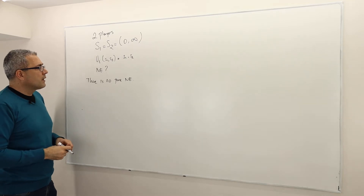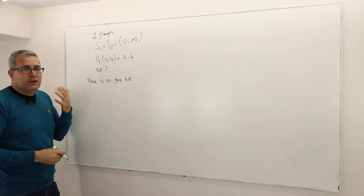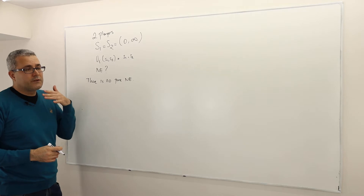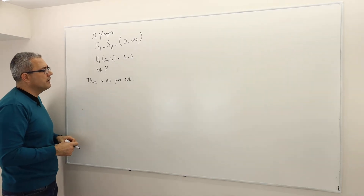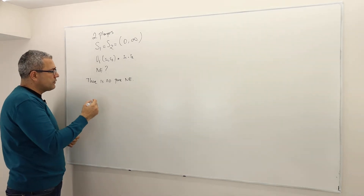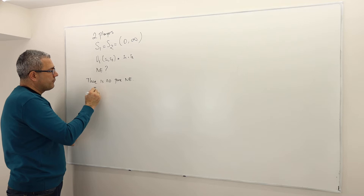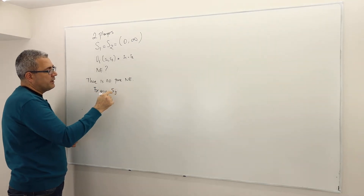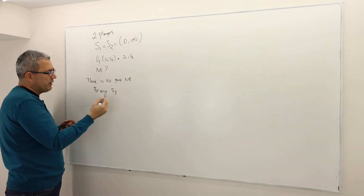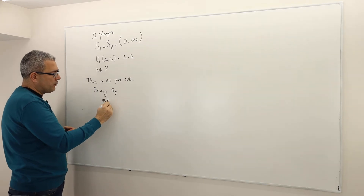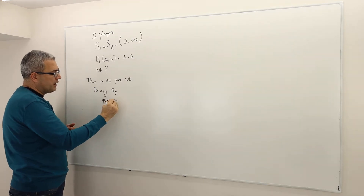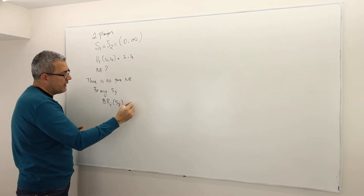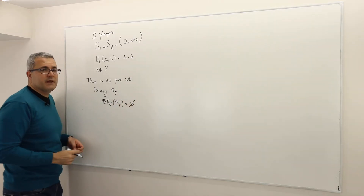Why so? For any strategy SJ of player J, the best response for player I, given that his or her opponent has picked SJ, is actually an empty set. To visualize things, let's suppose we're talking about player one and player two selected hundred. The question is: what is the best response for player one if his opponent has selected hundred?